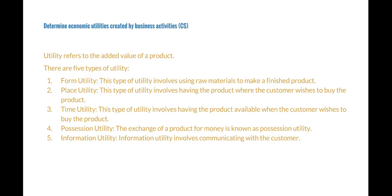Place utility involves having the product where the customer wishes to buy it — the added value is that you can have it where you want it. Time utility refers to having the product when you want it, so the added value has to do with time. Possession utility has to do with the exchange of a product for money — using credit and many types of payment to acquire a product is known as possession utility. And information utility involves communicating with the customer.